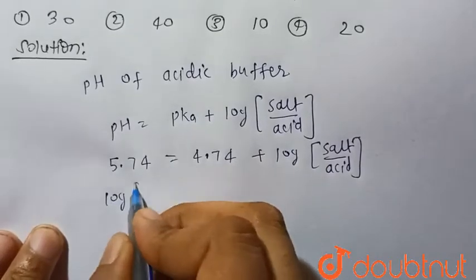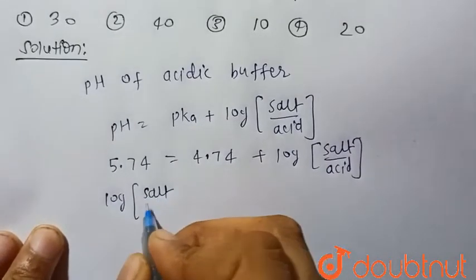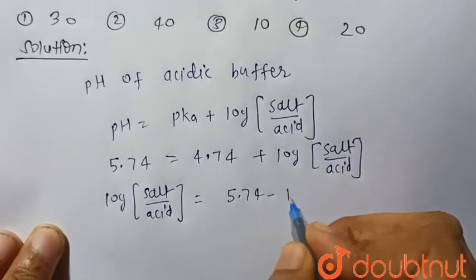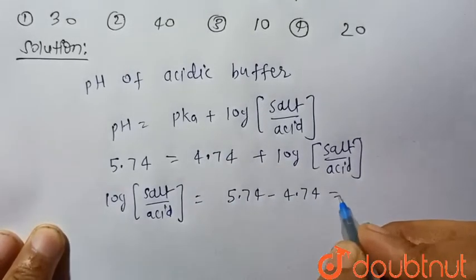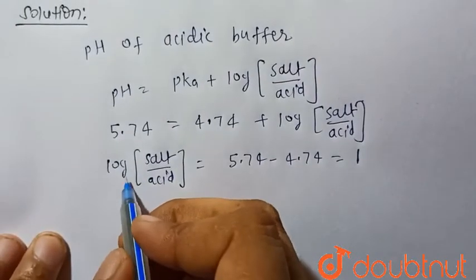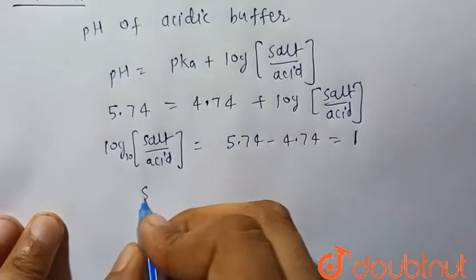Log of salt upon acid will be equal to 5.74 minus 4.74, which is equal to 1. So we know that log had base 10.